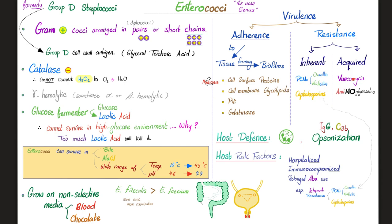If you remember your pharmacology, cephalosporins are considered lame because they cannot cover LAME — and the E was Enterococcus. How can you defend yourself against Enterococcus? You have your neutrophils, opsonization, IgG antibodies, and complement C3b protein. Who is at risk? The hospitalized, the immunocompromised, and those on prolonged antibiotic use — especially if they used antibiotics that will never work against Enterococcus, such as oxacillin, nafcillin, and the cephalosporins.